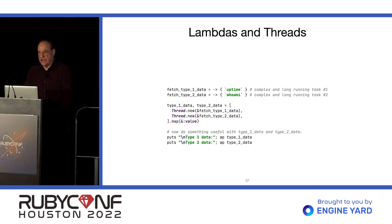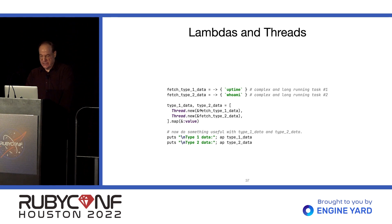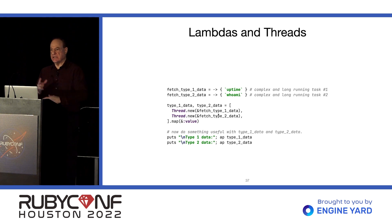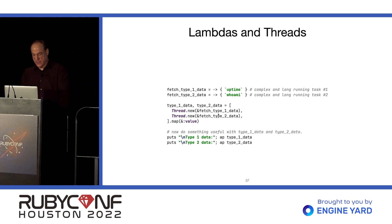Lambdas are handy for threads. When you create a thread and launch it, you pass it a code block. But using the ampersand, you can use a lambda instead — and then you have all the power of lambdas for combining and that kind of thing. That can be handy at times.